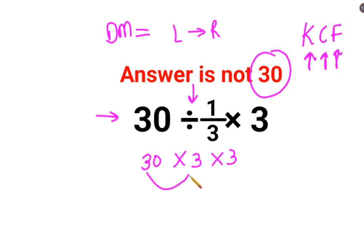So now we do 30 multiplied by 3, that gets you 90, multiplied by 3, that gets you 270. So the final answer for this question is supposed to be 270.